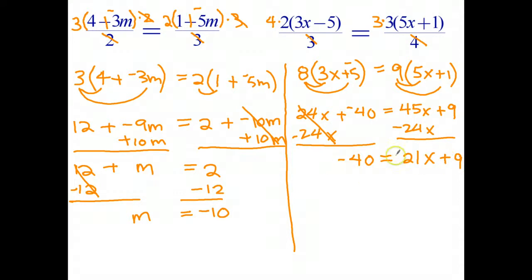Now we've got a two-step equation. The fact that the x is on the right-hand side isn't a problem. I'll just leave it there for now. First thing I'll do is subtract 9 from both sides. And they go to 0, leaving just 21x. And negative 40 subtract 9 is negative 49 equals 21x. Last step, divide both sides by 21.